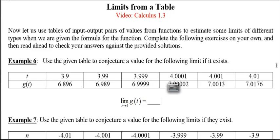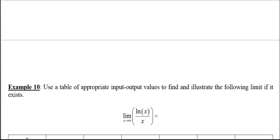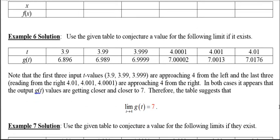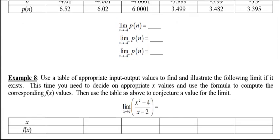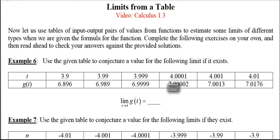So we're investigating the limit as t goes to 4 of g of t. We can see that in both cases, as the t values get closer and closer to 4, the g of t values get closer and closer to what appears to be 7. So it appears that the limit is 7. The table suggests that limit is 7. To formally prove this, we would need a formula and some algebraic techniques, but the table gives us a pretty good idea of what's going on.